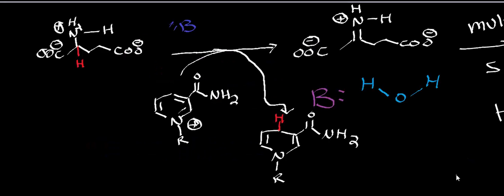Welcome back to the playlist on amino acid catabolism. In this video, we're going to very briefly discuss the mechanism of glutamate dehydrogenase. What I want to tell you about this mechanism is it's referred to as an oxidative deamination. The deamination in the name comes from the fact that we are going to deaminate, and one of the products of this reaction is going to be ammonia.